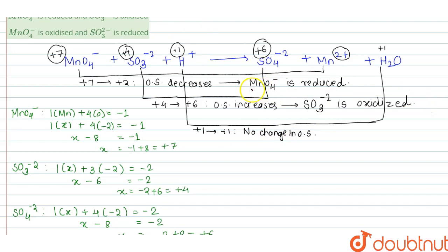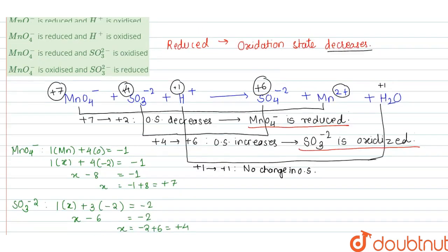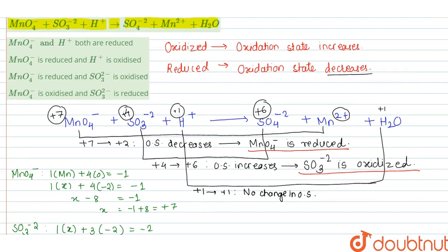So now, MnO4⁻ is reduced and SO3²⁻ is oxidized. The correct option is option 3: MnO4⁻ is reduced and SO3²⁻ is oxidized. Thank you.